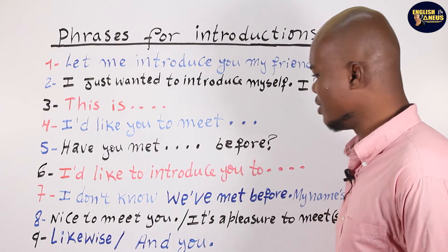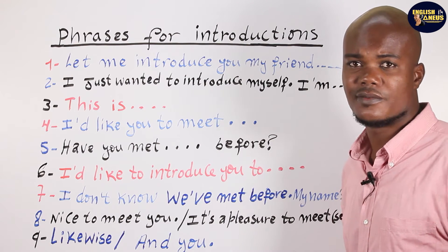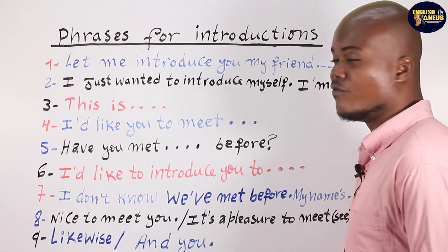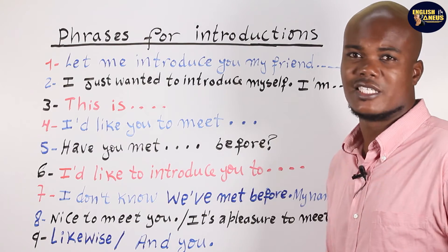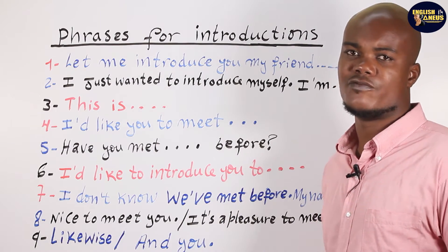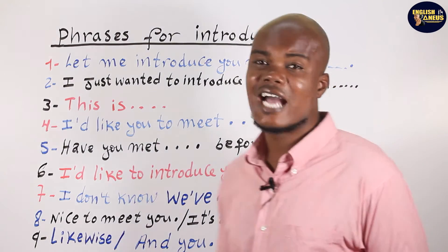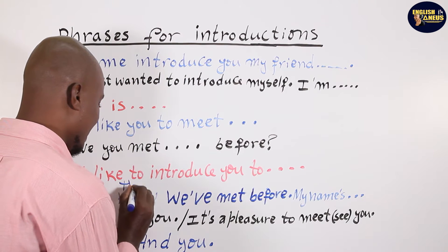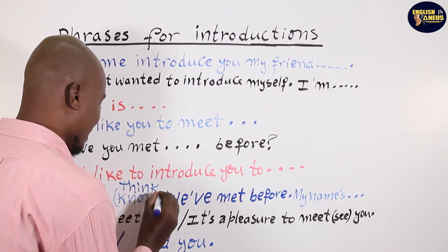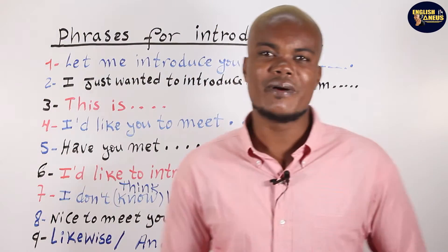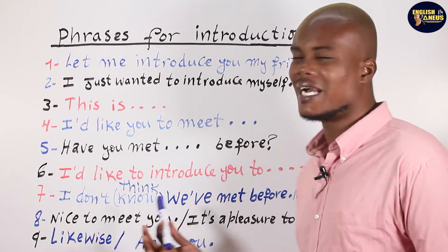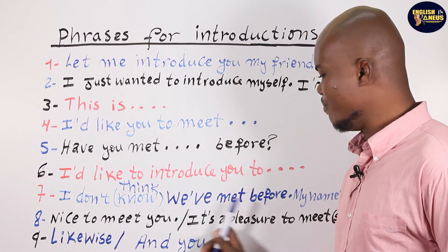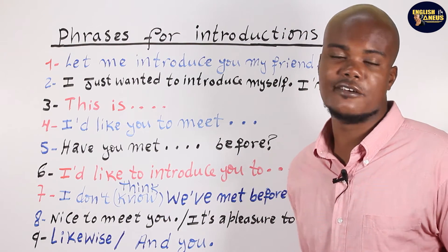You can also say: 'I don't think we've met before. My name is Daniel.' You can say 'I don't know if we've met before' or 'I don't think we've met before.' Both mean 'I'm not sure if we've met.' For example: 'I don't think we've met before. My name is Daniel.' Good.